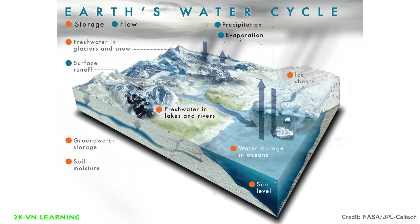How does water get into the atmosphere? There are two main ways this happens. Heat from the sun causes the water to evaporate from the oceans, lakes, and streams. Evaporation occurs when liquid water on Earth's surface turns into water vapor and enters our atmosphere.